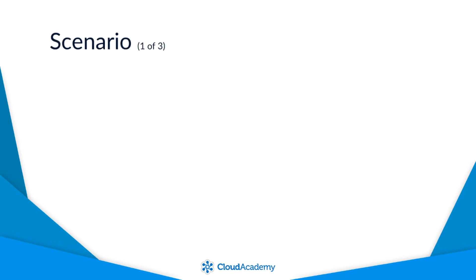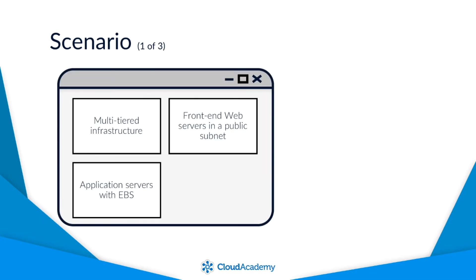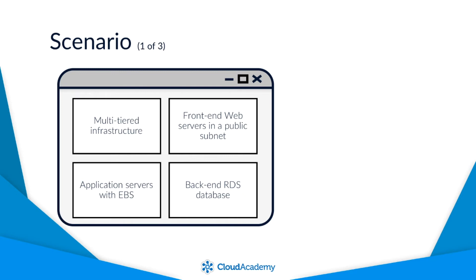Let's consider a simple scenario and how these config rules could be used. Let's say we are security architects responsible for ensuring specific security requirements are met in the following deployment. A new web application is being released into the production environment that consists of multi-tiered infrastructure, with front-end web servers in a public subnet, application services with EBS and a back-end RDS database. The application and environment itself is expected to scale with demand, both up and down.